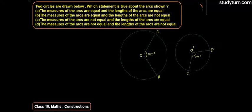Hello students. Today we will be solving a problem of Class 10th Maths from the Chapter Geometric Constructions. The question states that 2 circles are drawn as shown below. Which statement is true about the arcs drawn?